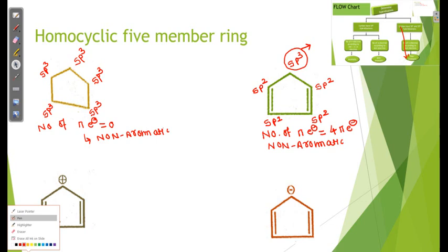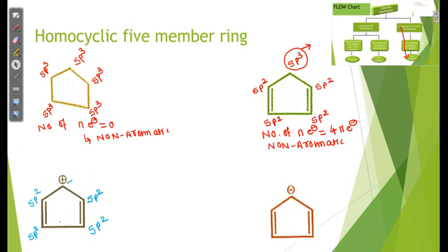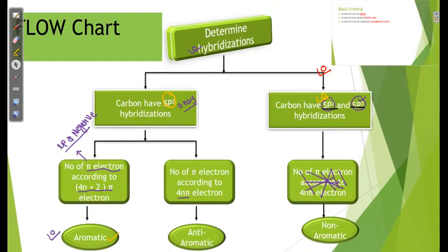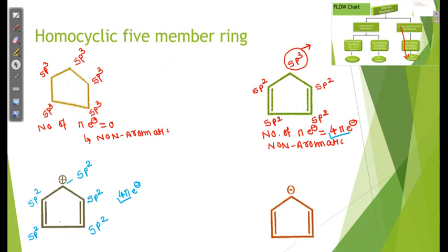These are two important examples. In this case, the hybridization of every carbon is sp2, sp2, sp2, sp2, sp2 — all sp2. With all sp2 hybridization, we have two criteria to check: the number of pi electrons. Here the number of pi electrons is 4. Since all are sp2 and there are 4 pi electrons, we follow the anti-aromatic pathway. This compound is anti-aromatic.